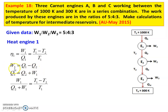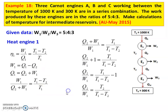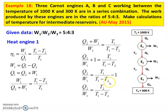W1 equal to Q1 minus Q2, so Q1 equal to Q2 plus W1. Therefore W1 divided by Q2 plus W1 equal to T1 minus T2 divided by T1. Taking the reciprocal: Q2 plus W1 divided by W1 equal to T1 divided by T1 minus T2. Splitting the left-hand side: Q2 by W1 plus 1 equal to T1 by T1 minus T2. Therefore Q2 by W1 equal to T2 by T1 minus T2.